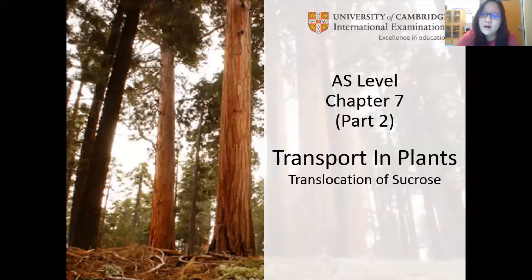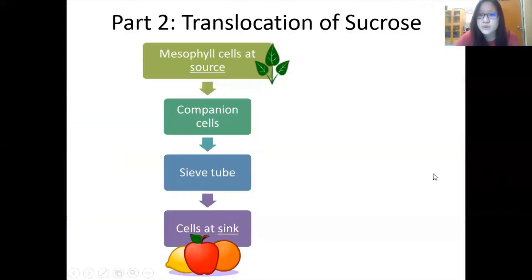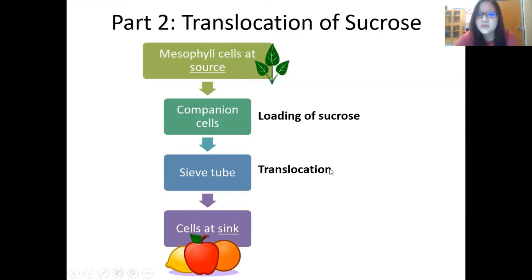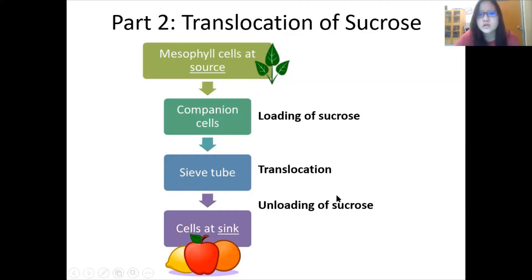But now here we are talking about the translocation of sucrose. In general, sucrose is made at the mesophyll cells at the source, along with other things, but we only talk about sucrose in A-levels here. There will be loading of sucrose into the sieve tube from the companion cells, and then the sucrose gets transported from the source to the sink via the sieve tube using this process called translocation. And then there is the unloading of sucrose — three steps here for the transport of sucrose.